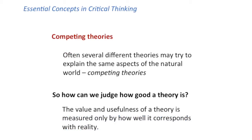Sometimes there may be several different theories that try to explain a phenomenon in the natural world, and this is often the case when we're dealing with complex phenomena such as the global challenges that we're going to use as examples in this course, because the relevant information about these phenomena is often incomplete or unavailable. So when we have several competing theories, how can we judge how good a theory is?